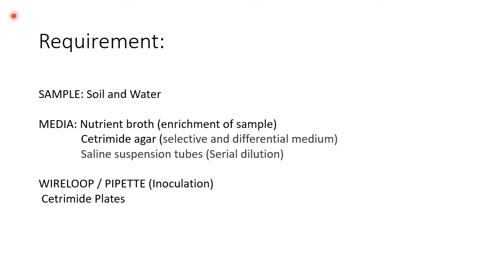Now what are the requirements? For samples we are using soil and water. For media we need nutrient broth for enrichment of our sample — nutrient broth is a very basic media in microbiology but we are using it for enrichment. Cetrimide agar is the selective and differential media generally used for isolation of Pseudomonas. Then we need saline suspension tubes for serial dilution, wire loop and pipettes for inoculation, and sterile media plates of cetrimide agar and sterile broth. Other requirements include Bunsen burners and 70% IPA for disinfection.